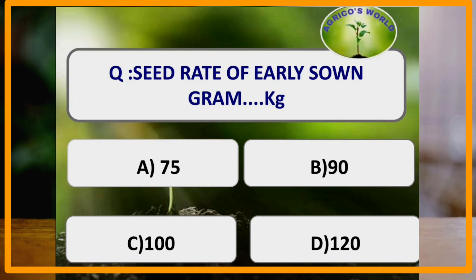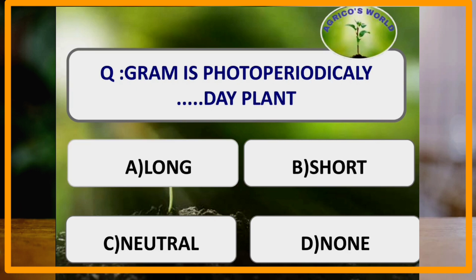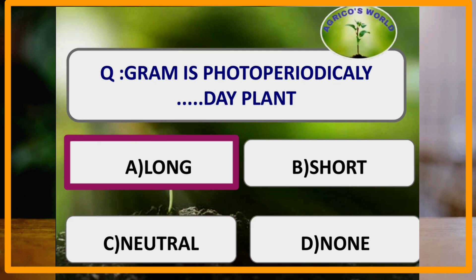Seed rate of early sown gram is 75 to 80 kg with a spacing of 30 by 10 centimetres. Gram is photoperiodically a long day plant, which means it requires more than 12 hours of sunshine for its development.